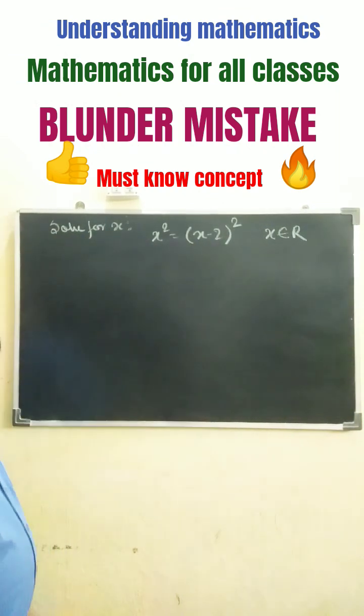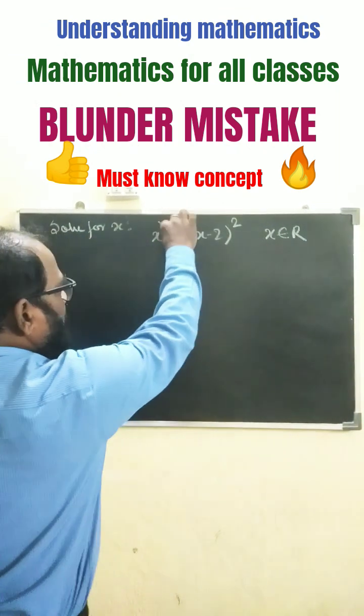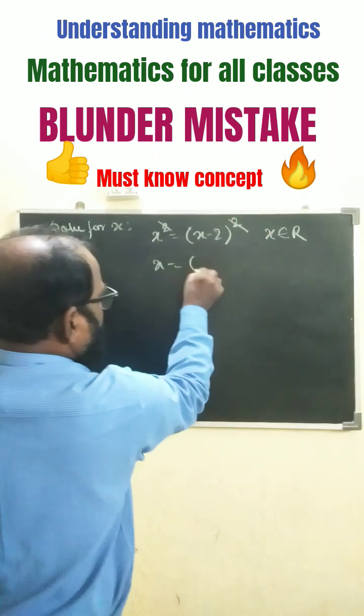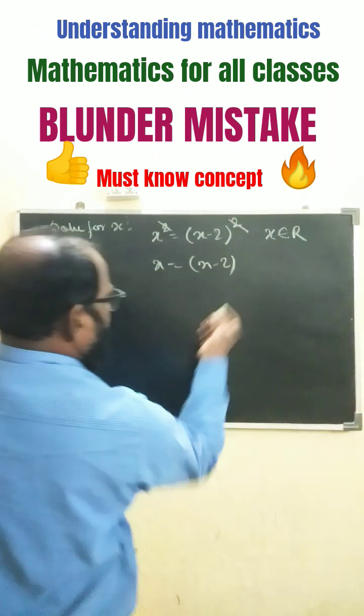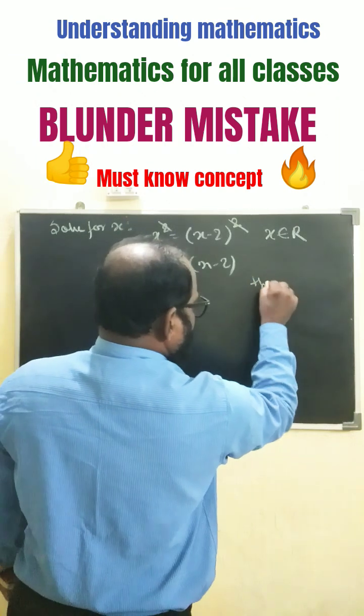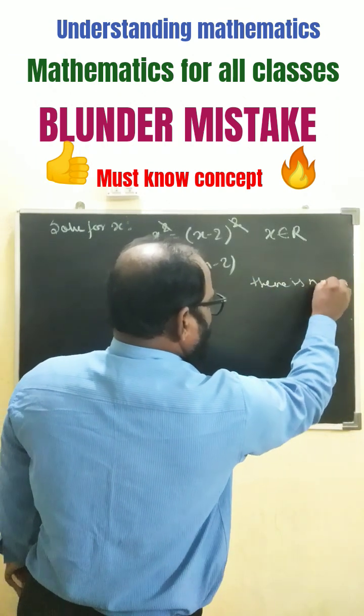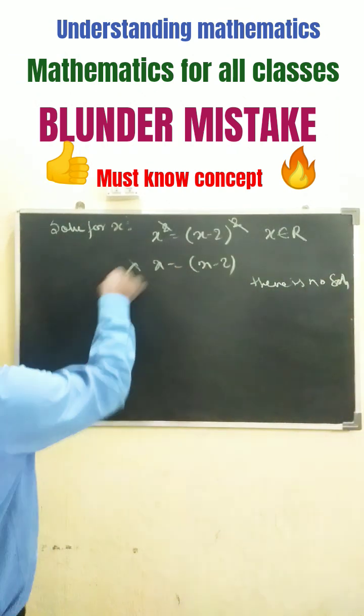So they cannot simplify. They simplify by just canceling off this power and write x equals to x minus 2, and finally they write there is no solution. So this is completely wrong.